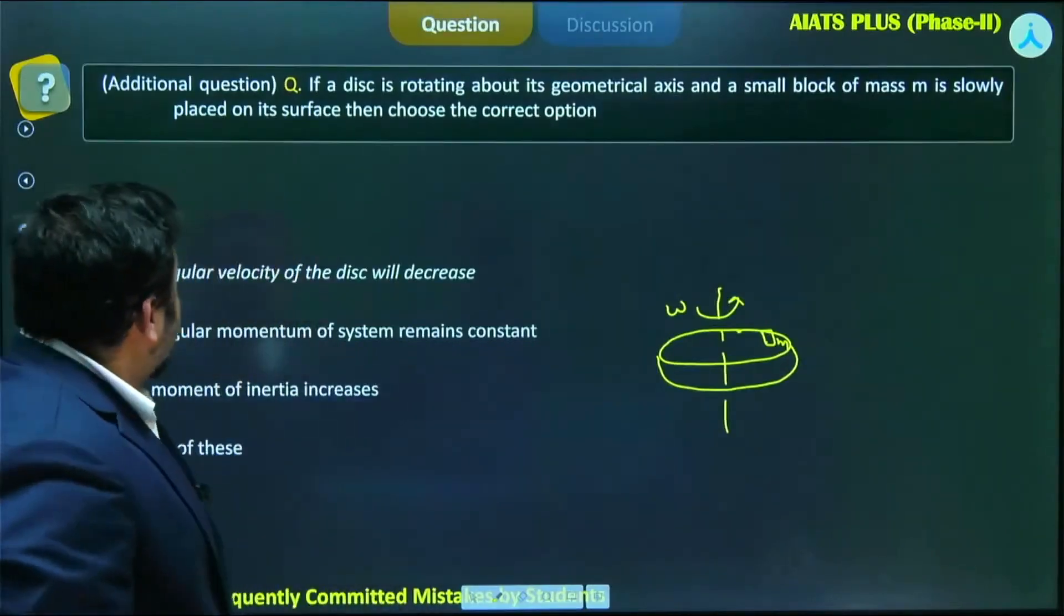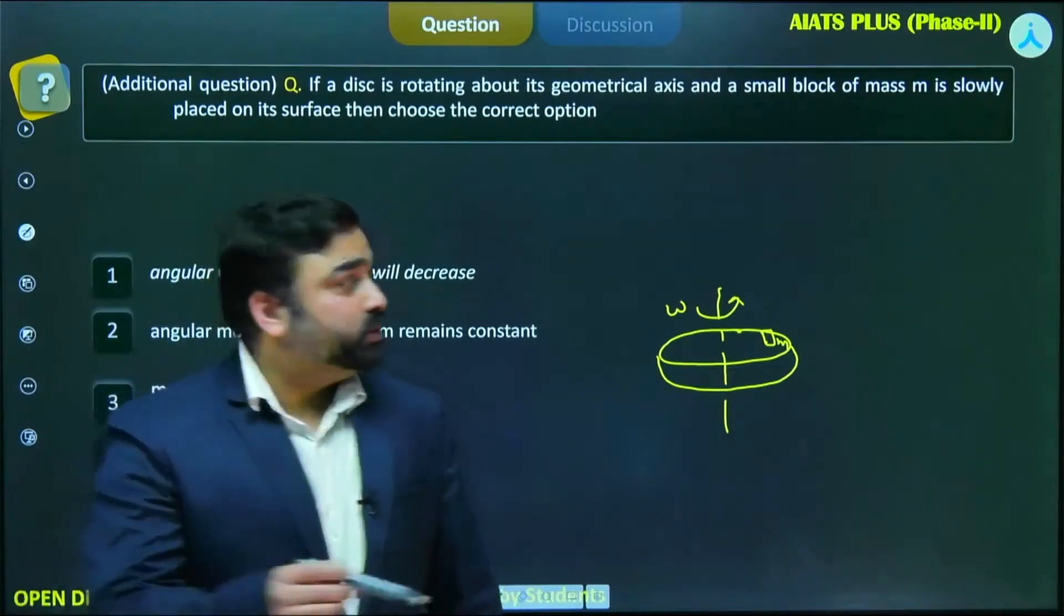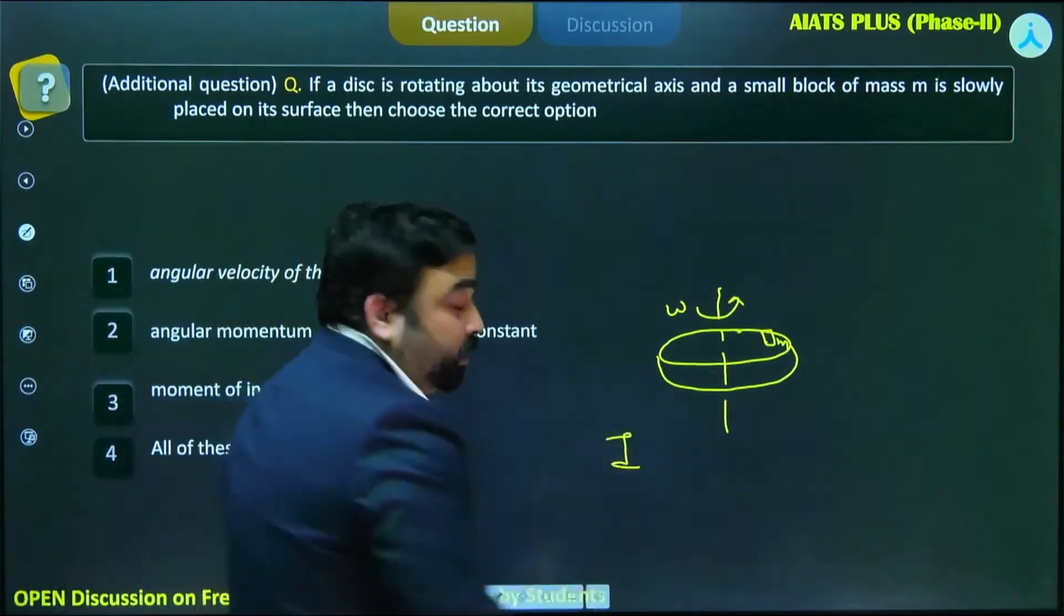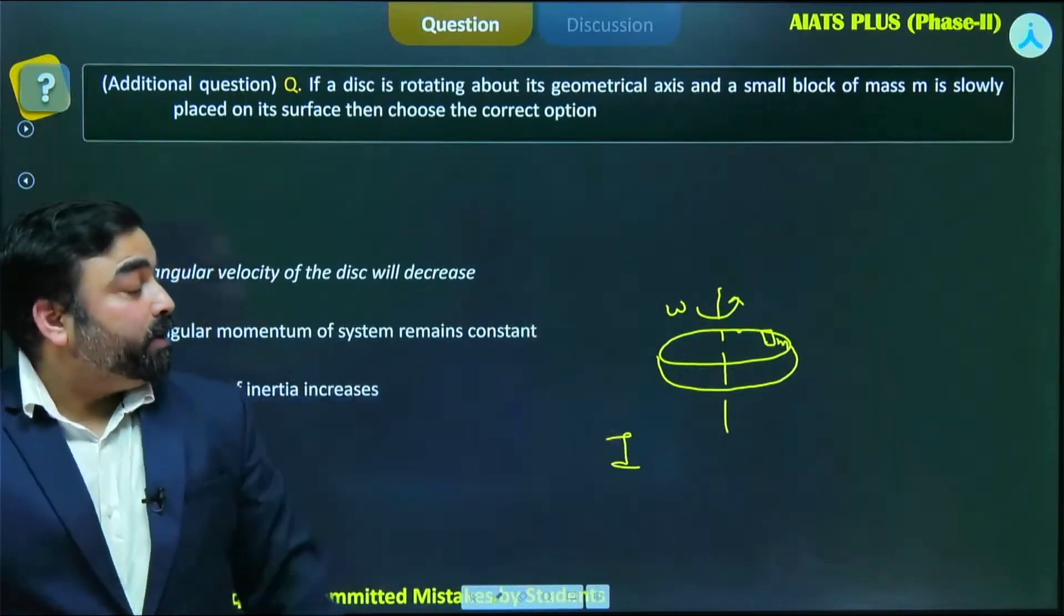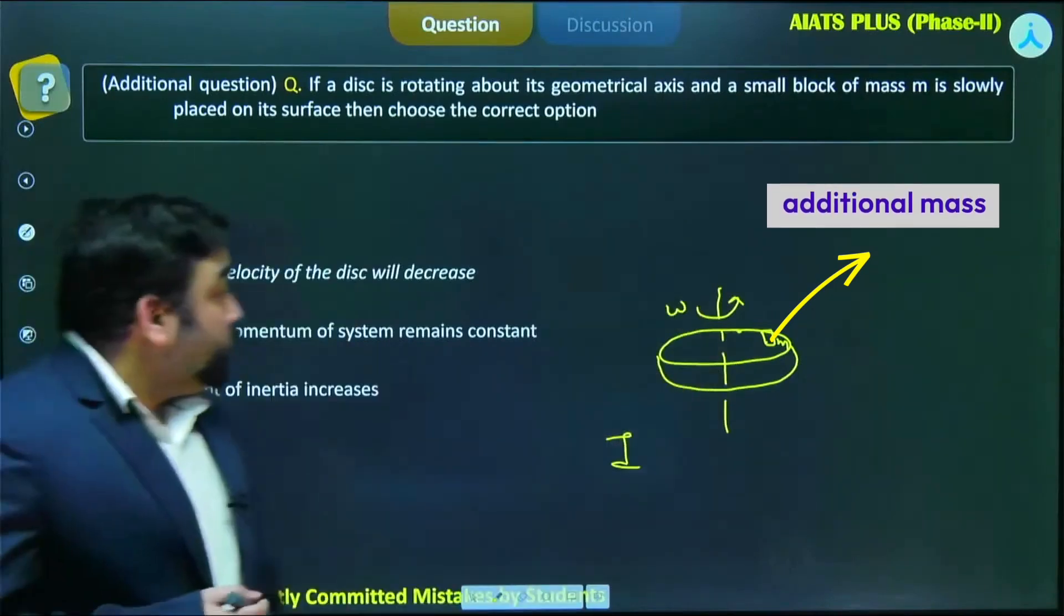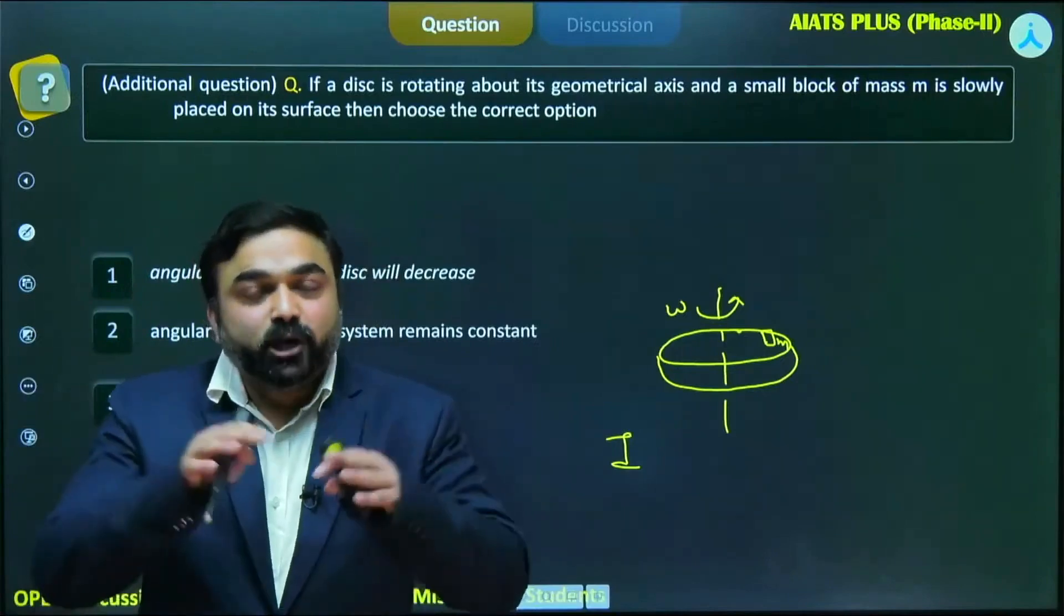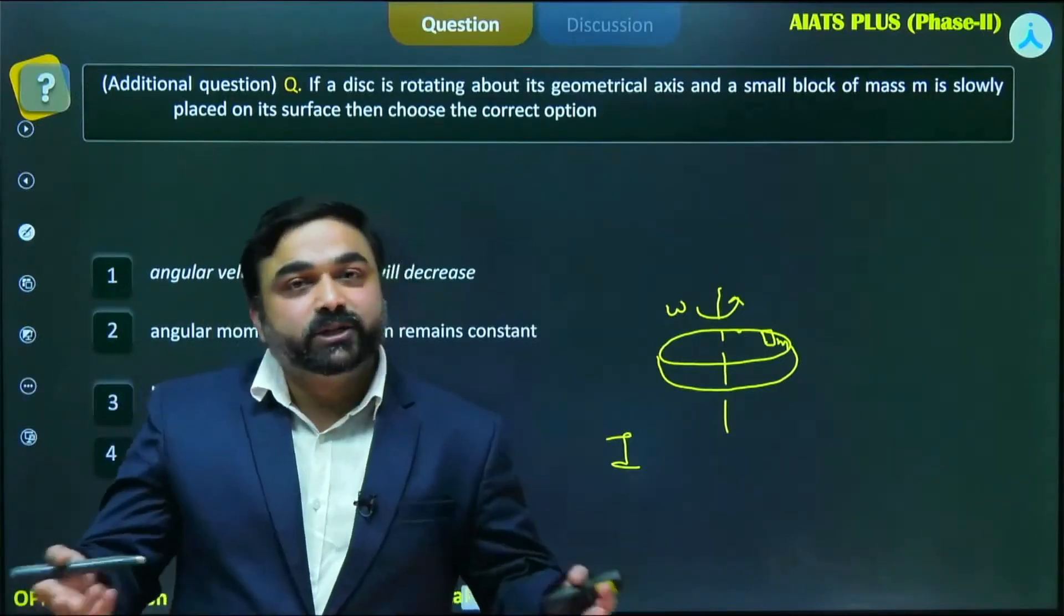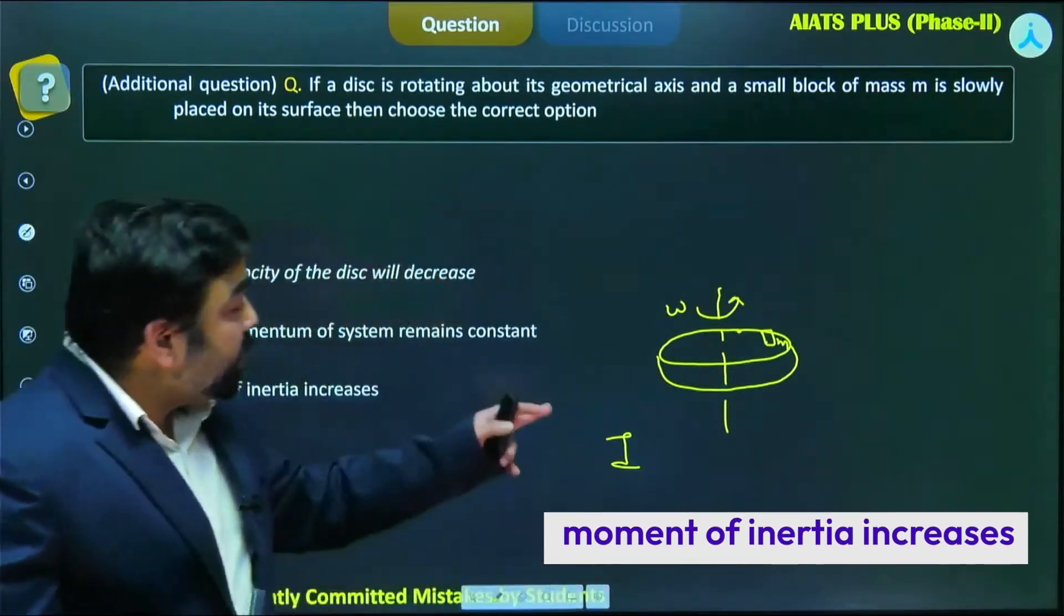We know that moment of inertia depends on the mass distribution. Here you can see there is an additional mass in the system, so definitely moment of inertia will increase since we are adding mass to the system. And if moment of inertia increases in this isolated system...